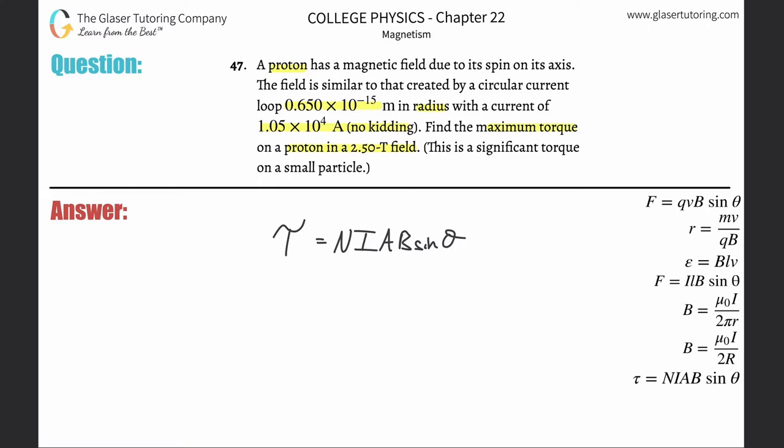Here, to find the torque, we have to identify all these variables. Number of loops here is just a proton, so it's one. The current here they told us is 1.05 × 10^4.